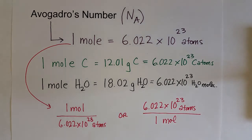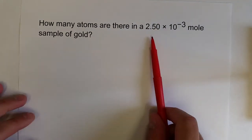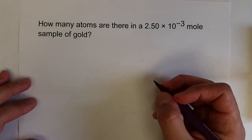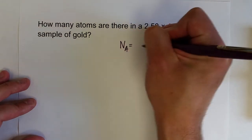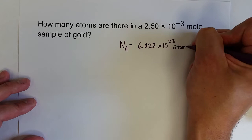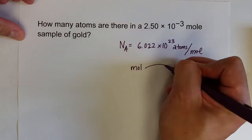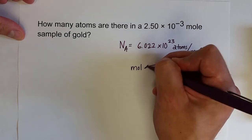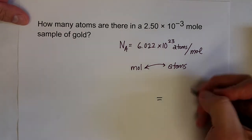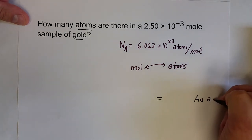Let's look at a couple of examples. Our first example: we have a sample of 2.50 times 10 to the negative 3rd moles of gold — how many atoms are in this sample? For this, we'll use Avogadro's number, 6.022 times 10 to the 23rd atoms per mole, any time we want to convert from moles to atoms. We want gold atoms as our final unit, so I'll write down Au atoms, and our sample contains 2.50 times 10 to the negative 3rd moles of gold.